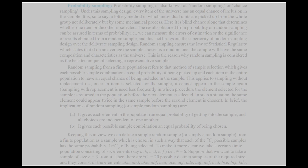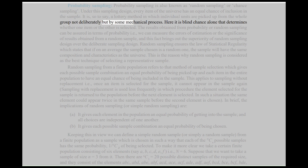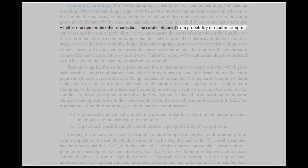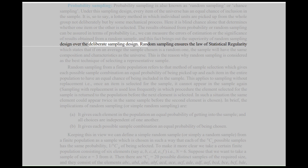Probability sampling is also known as random sampling or chance sampling. Under this sampling design, every item of the universe has an equal chance of inclusion in the sample. It is, so to say, a lottery method in which individual units are picked up from the whole group not deliberately but by some mechanical process. Here it is blind chance alone that determines whether one item or the other is selected. The results obtained from probability or random sampling can be assured in terms of probability — we can measure the errors of estimation or the significance of results obtained from a random sample — and this fact brings out the superiority of random sampling design over the deliberate sampling design.